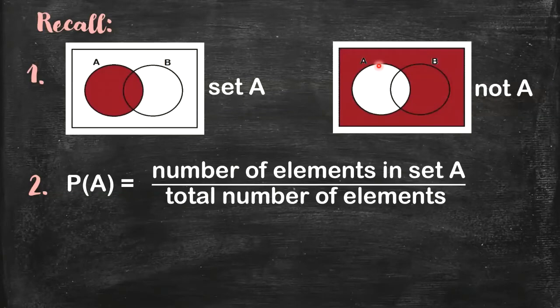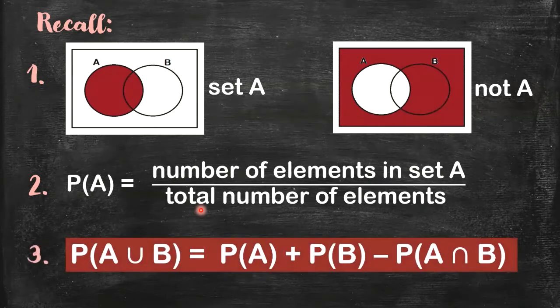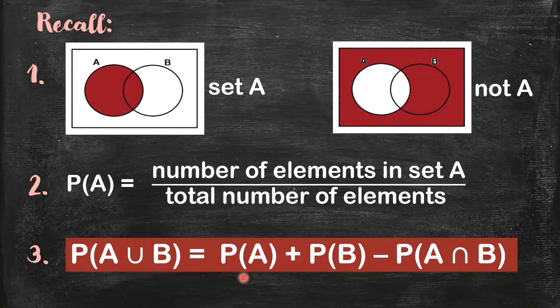It is also nice to recall how we get the probability of a given set. To get the probability of A, all you have to do is count the number of elements in the given set A, and then divide it by the total number of elements — the number of elements in the given universal set. And please recall this formula: how do you get the probability of the union of two sets or two events? This is equal to the probability of A plus the probability of B minus the probability of A intersection B.